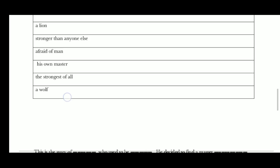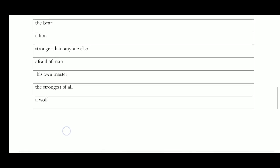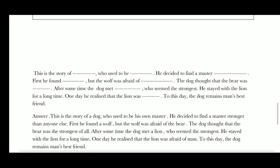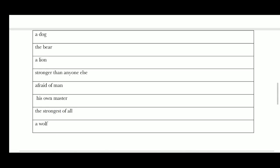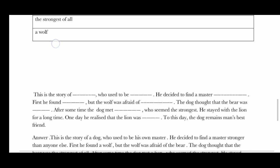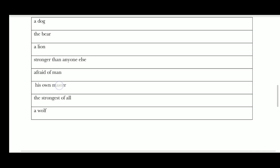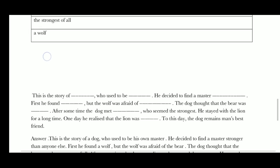First he found the wolf, but the wolf was afraid of the bear. That's the second option. After that, the dog thought that the bear was the strongest of all. This is the second blank.